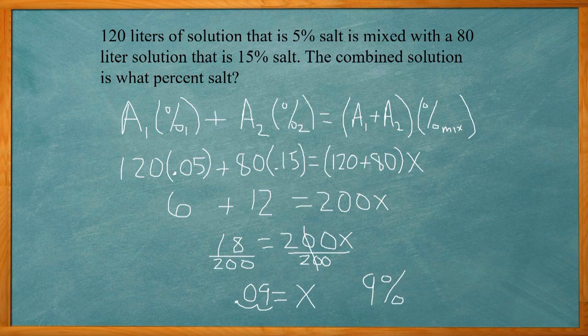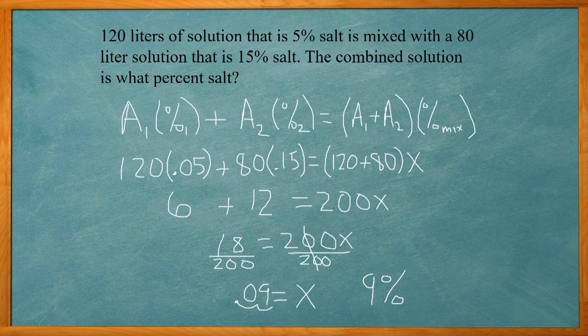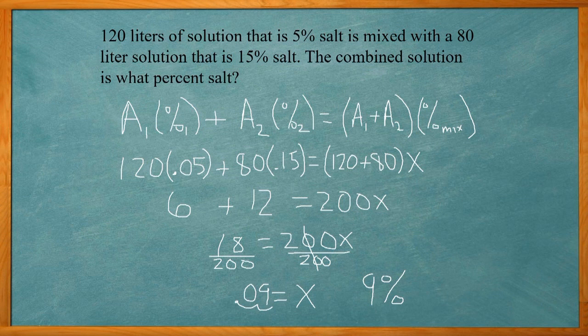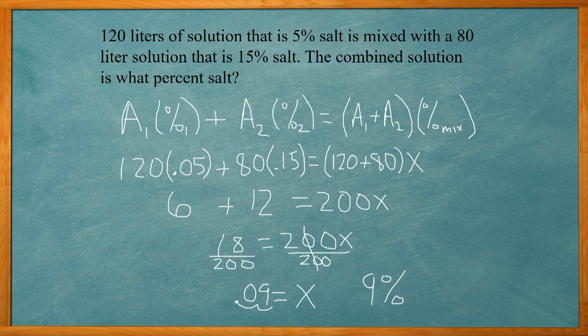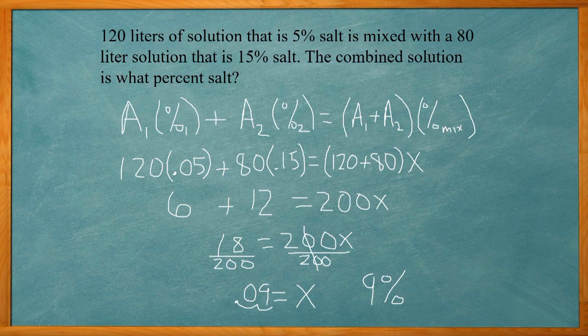So if you combine 120 liters solution that's 5% salt with an 80 liter solution that's 15% salt, you'll end up with 200 liters. That's going to end up being 9% salt. So that's how you solve a mixture problem that you might find on the ACT exam.